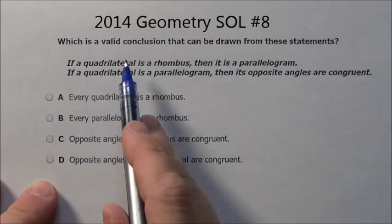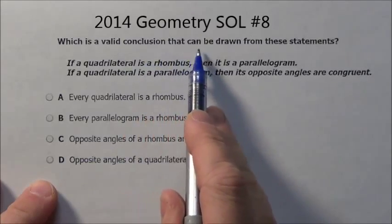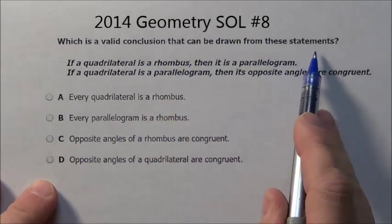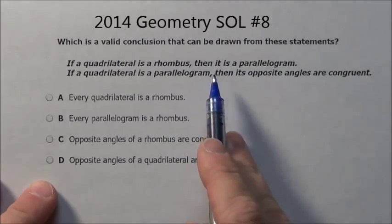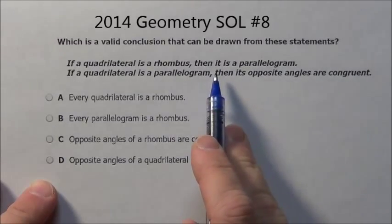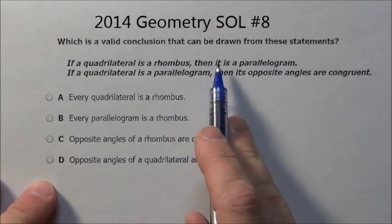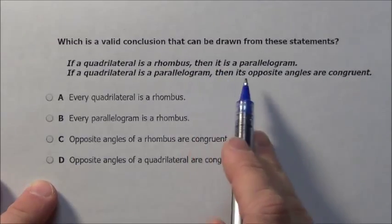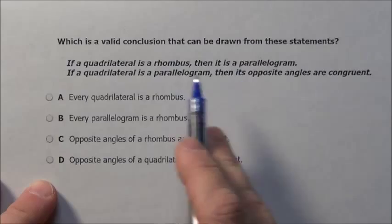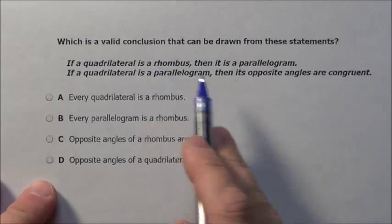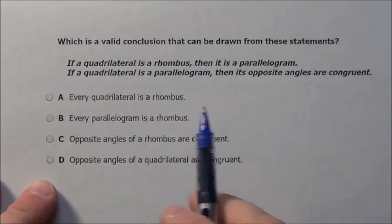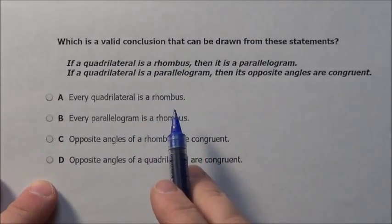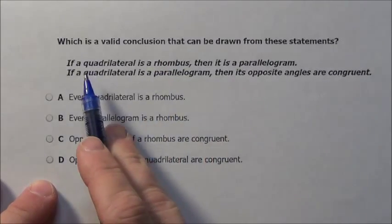Here's problem 8. It says, which is a valid conclusion that can be drawn from these statements? They're going to give us two statements — one is going to imply something to the second, and we're going to be able to make some conclusion relating the first and the second.